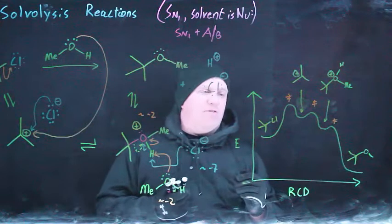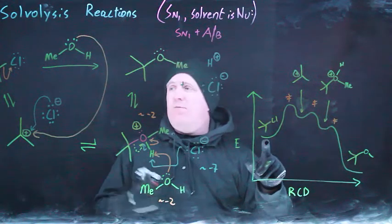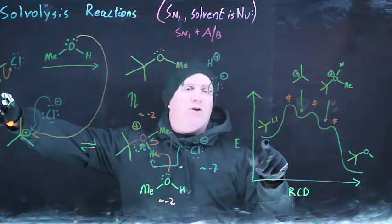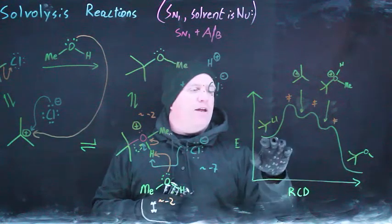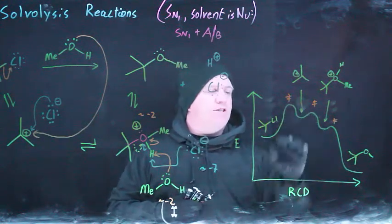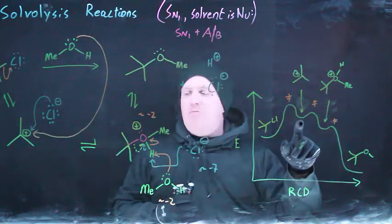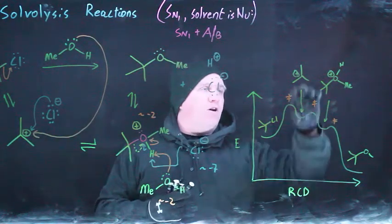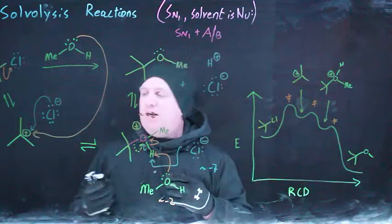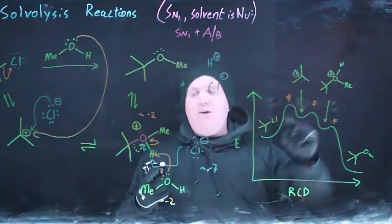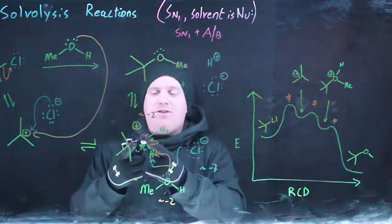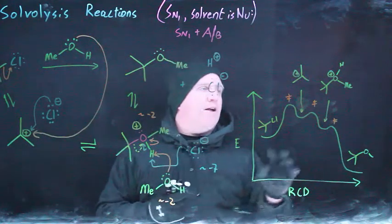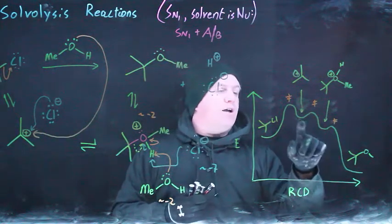So the reaction coordinate diagram for the entire process starts with the starting materials, which is to say the T-butyl chloride and some methanol here, and then it proceeds through some transition state to a relatively high energy intermediate, which is the carbocation itself. Again, it does not like to form a carbocation in the first place. That is going to be a high energy intermediate.